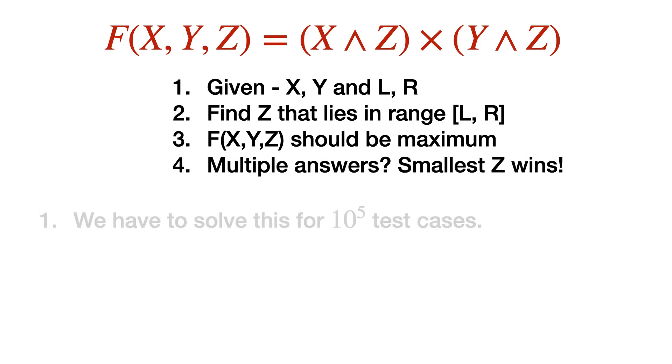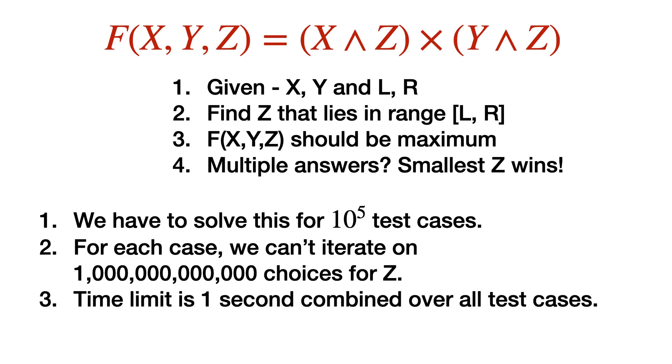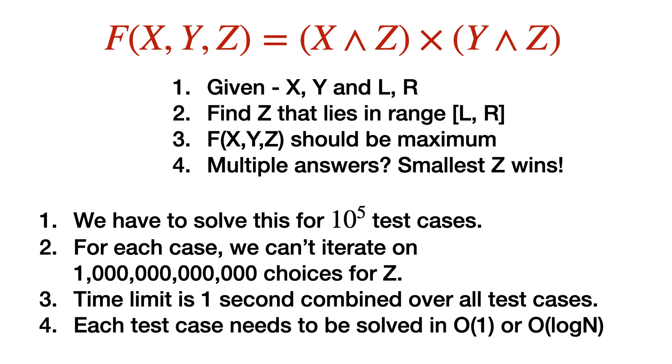In each test case, we cannot iterate on a trillion range for the choices of Z. It's not possible because we have a time limit of one second combined over all test cases. That's what makes this problem so difficult. Each test case needs to be solved in order one or log n time. Now I really encourage you to take a pause. Please leave aside everything, sit tight and enjoy this video.